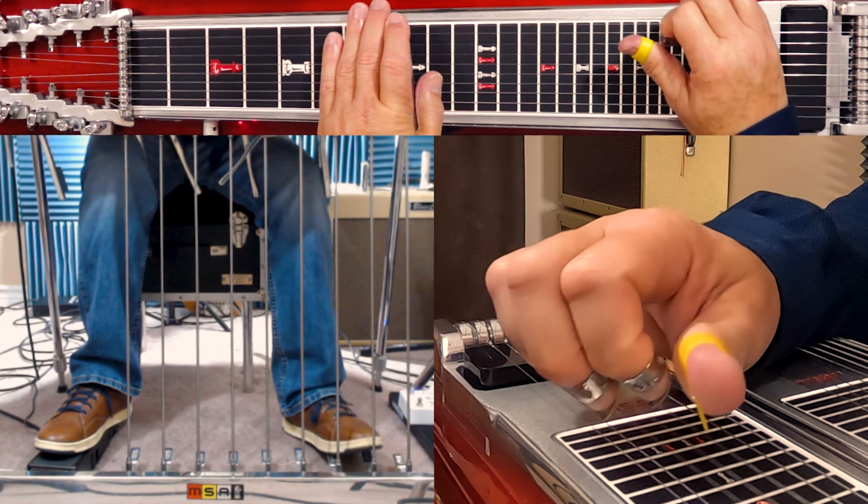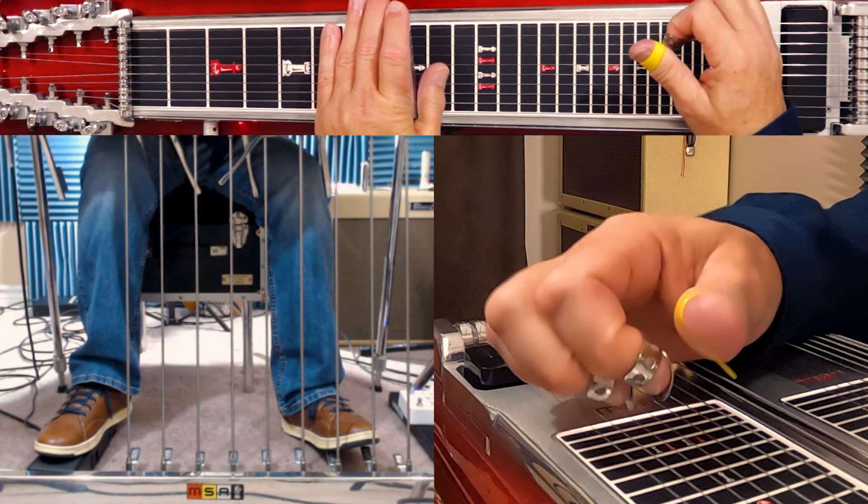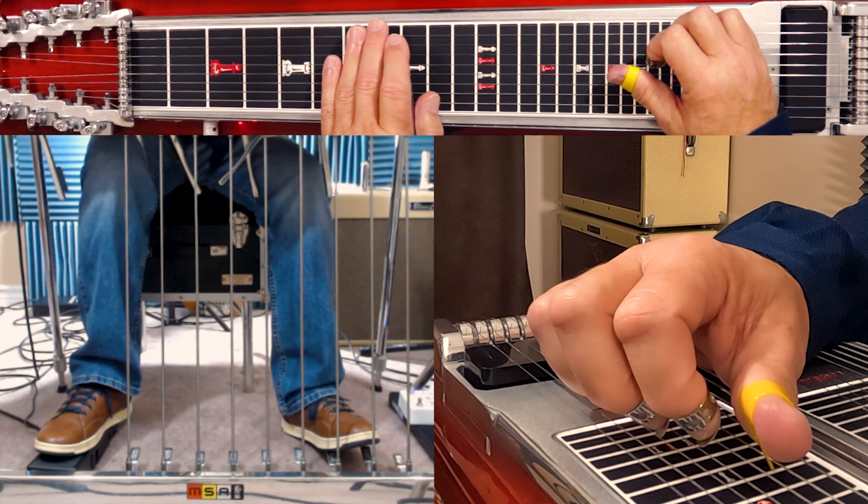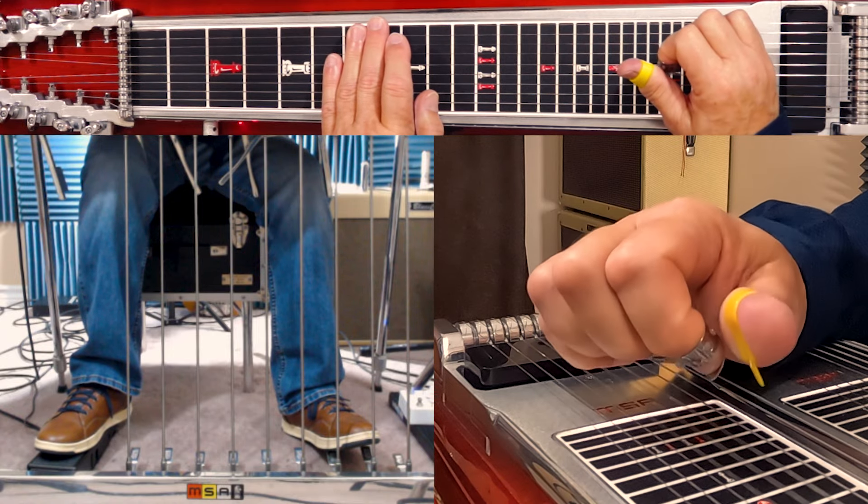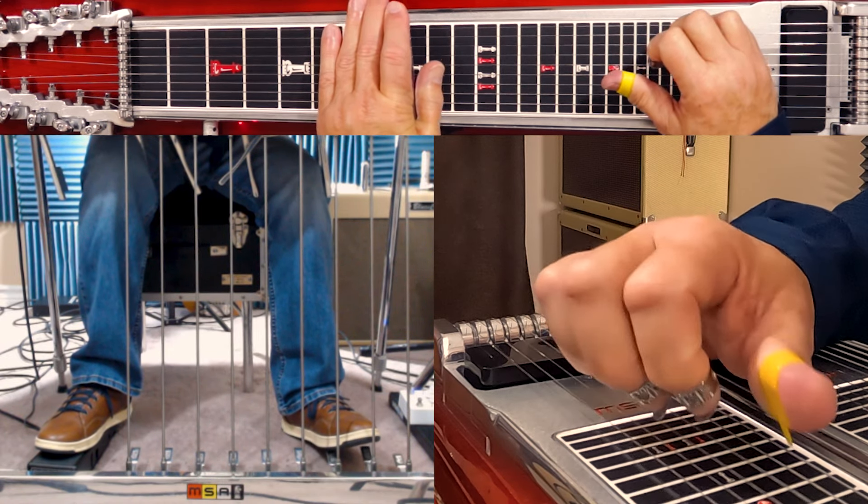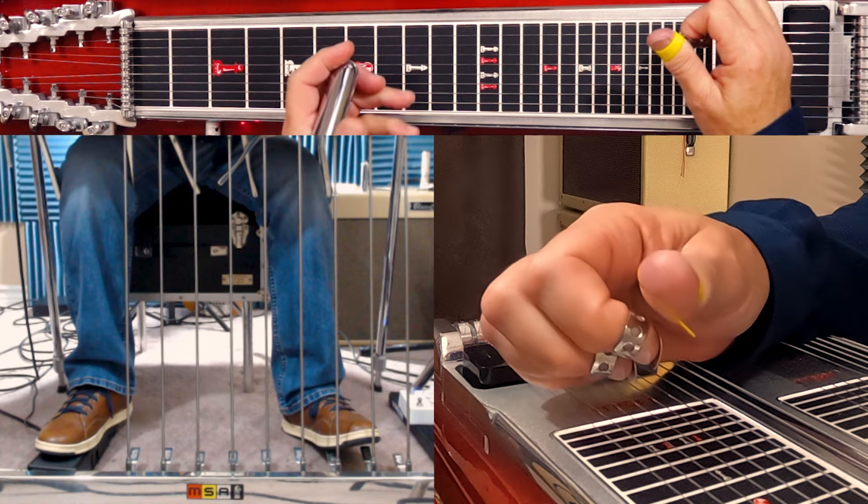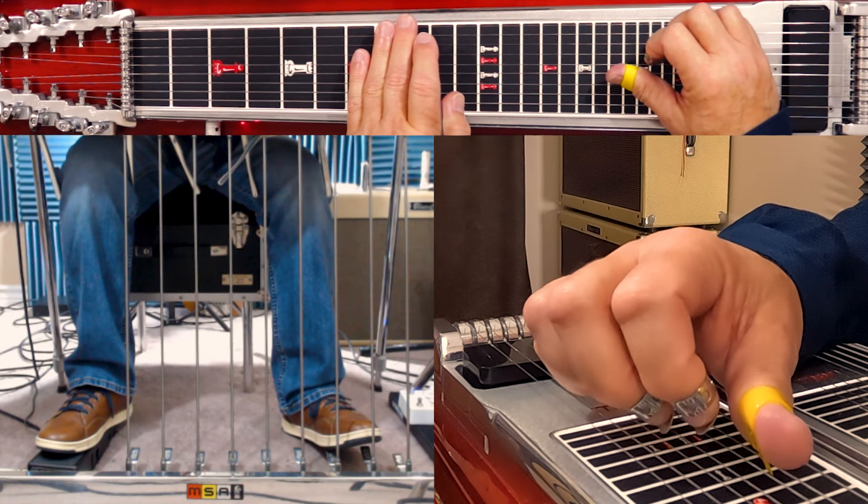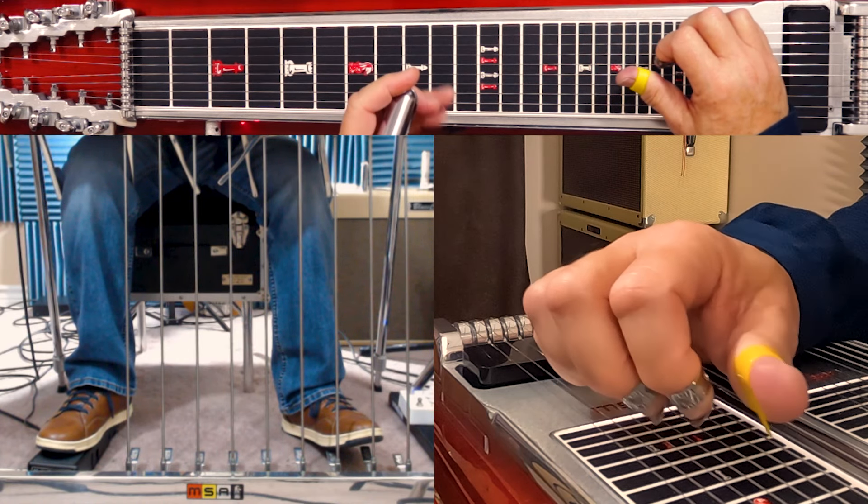Then hit one. Four, five, six. As a group, ED flat knee lever still down. No pedals, no knee levers. Four, five, six at the ninth. Slide it to the tenth.